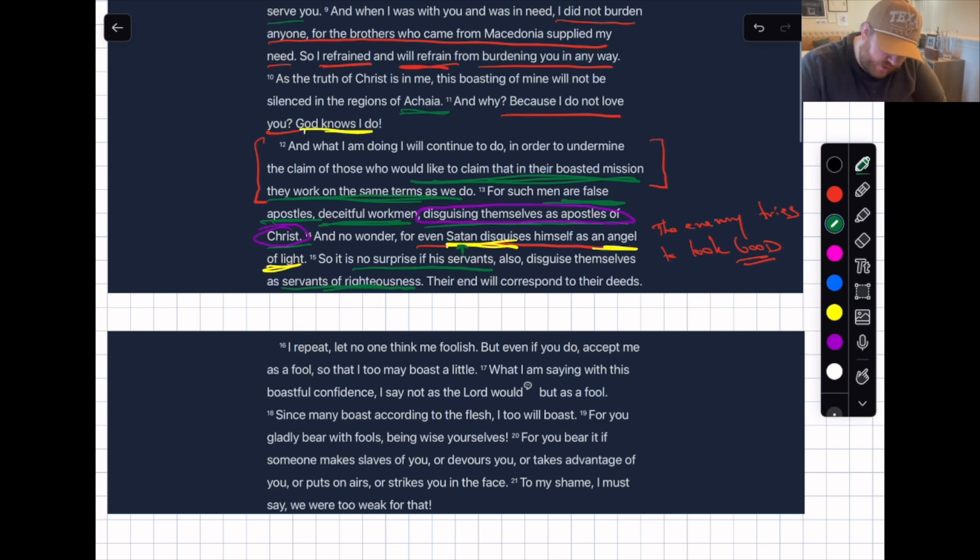So too, he's saying, same thing with these super apostles. So it is no surprise if his servants also—he's hitting hard—no surprise if his servants, so who's the 'his'? Satan's. Also disguise themselves as servants of righteousness. This is big. What is he saying here? These super apostles, who are they? They are Satan's servants. Straight up heretics, workers of the devil, of the enemy. Their end will correspond to their deeds. Boom.